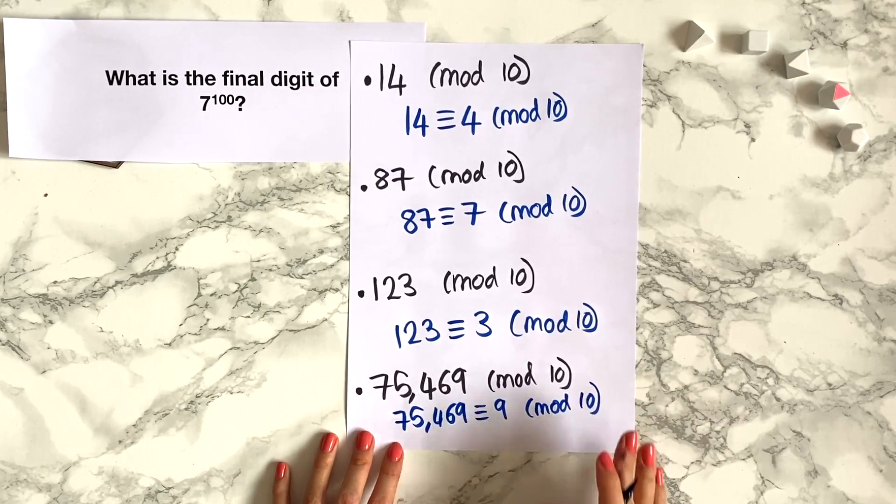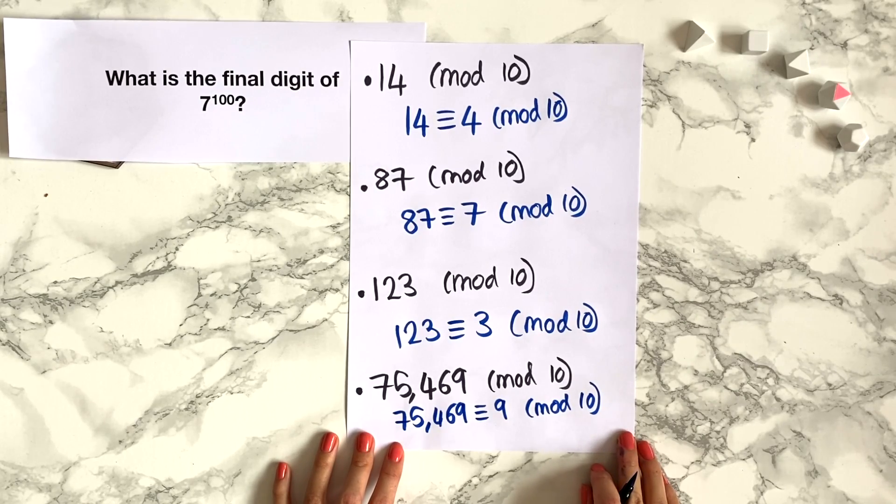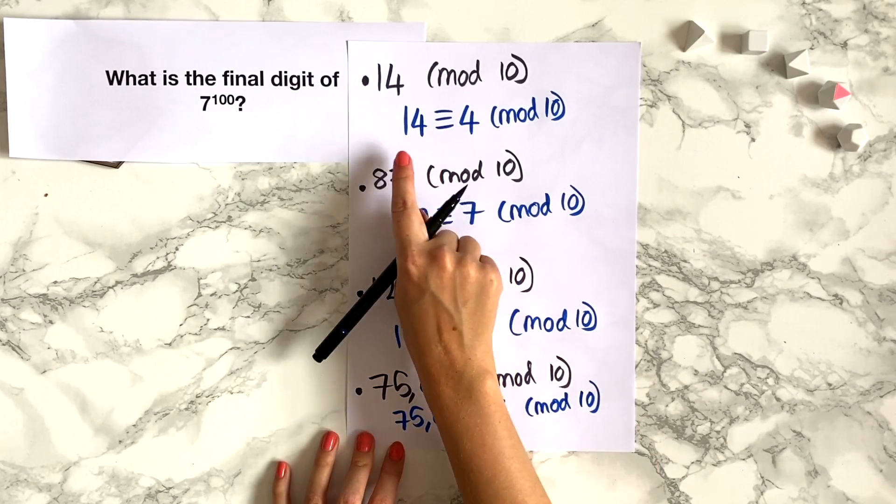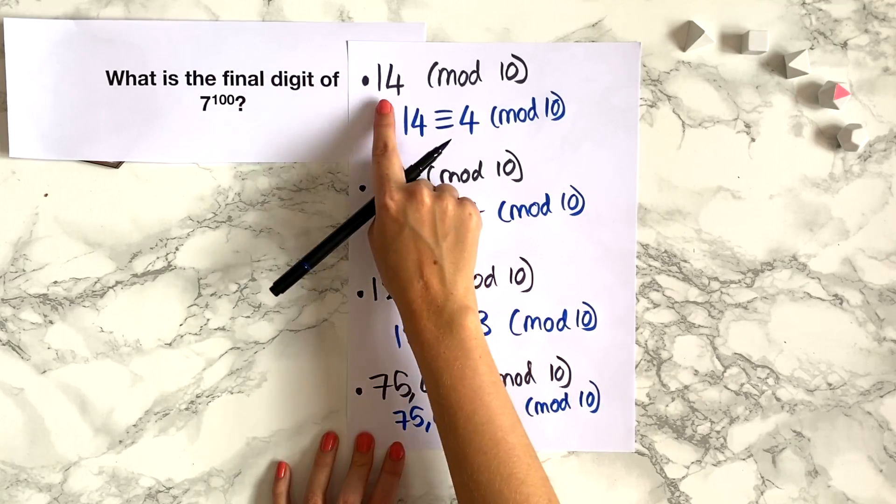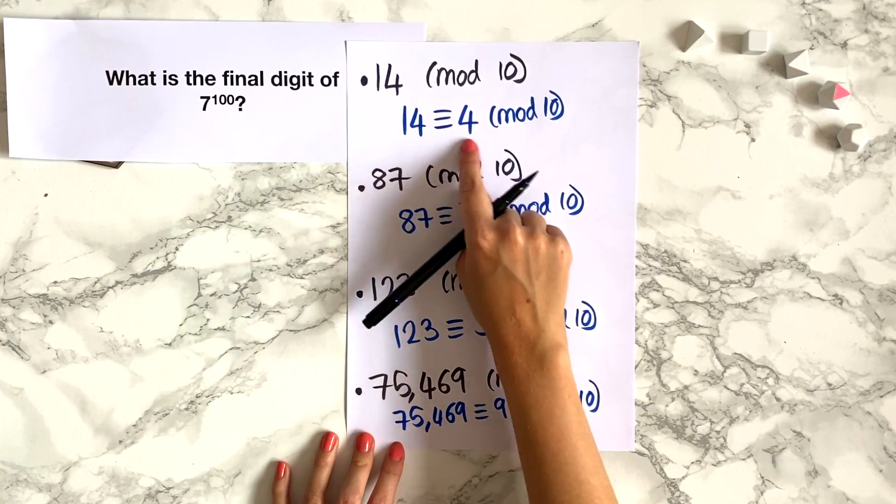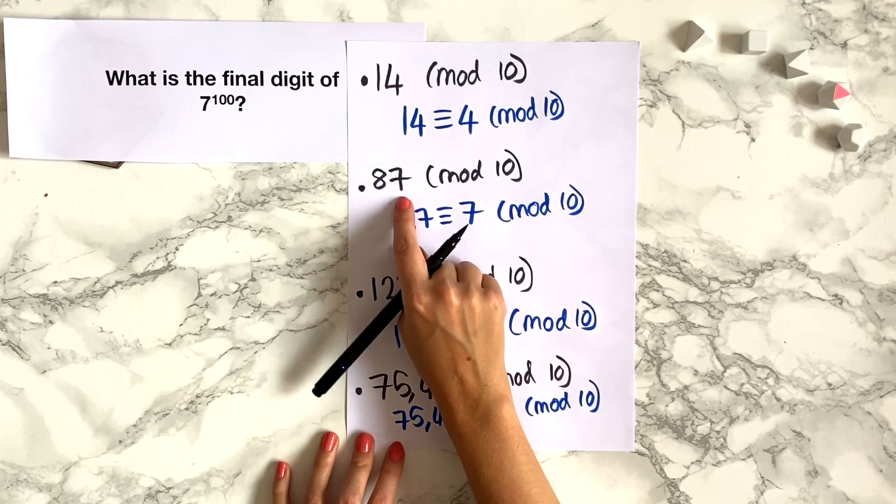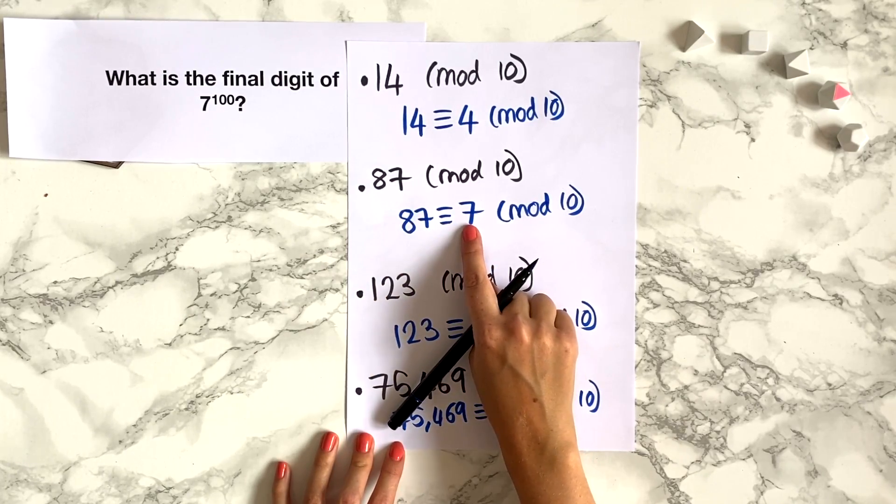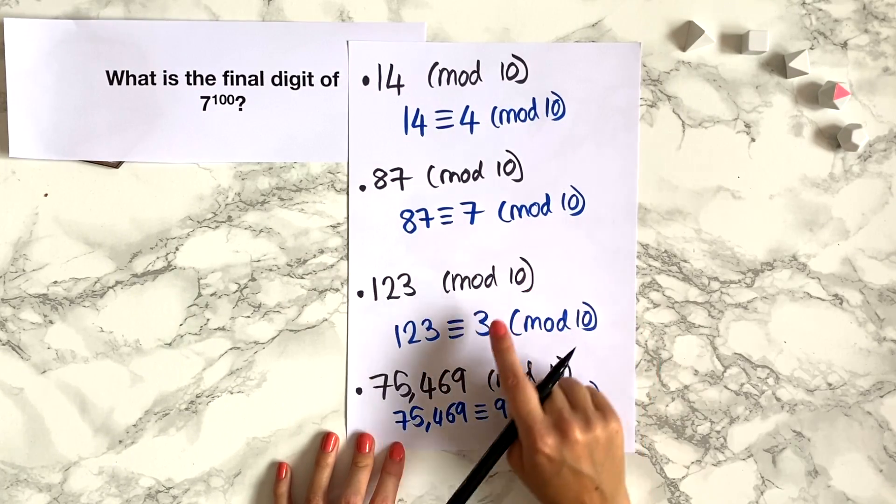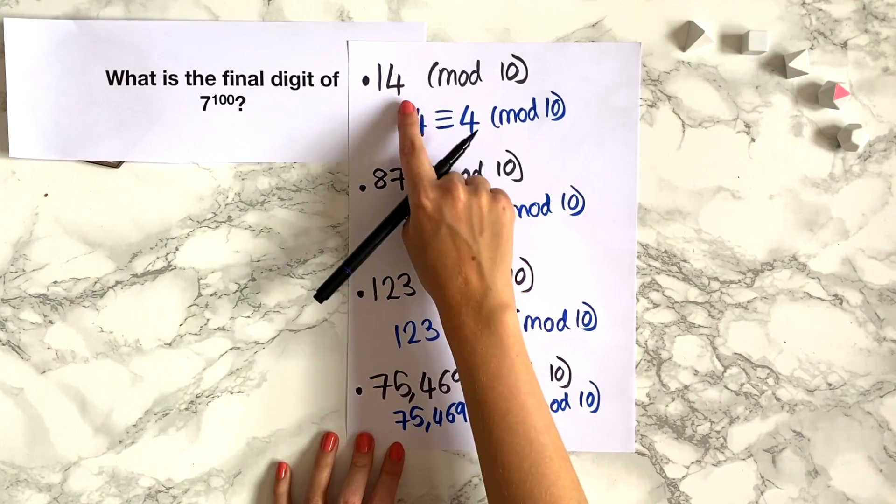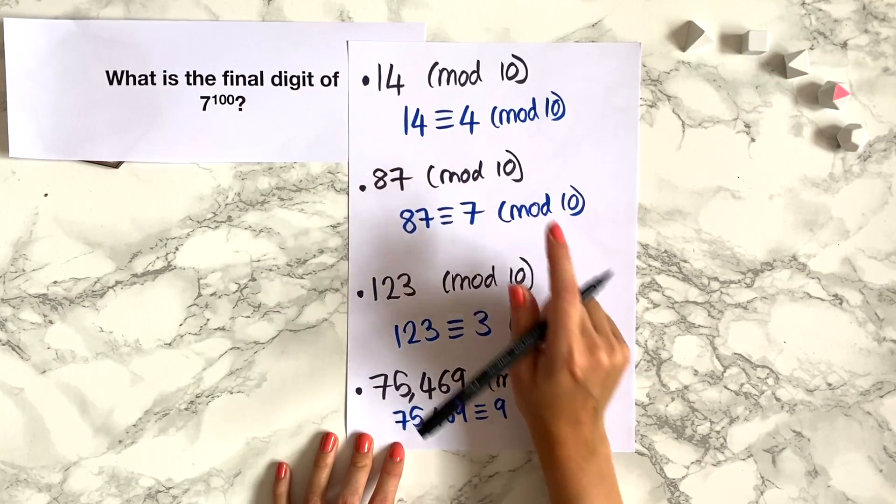Now can we spot a pattern in what we've found? Well it's quite interesting because in each of these cases taking the number modulo 10 has picked out the final digit of the number. So the final digit of 87 is 7 and that's picked out by taking it modulo 10, and the same in each of these cases.